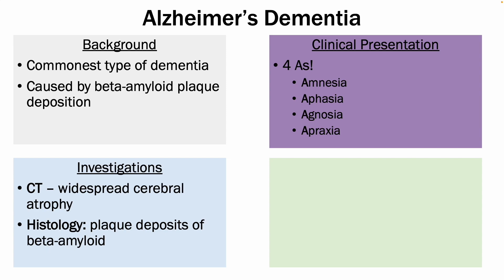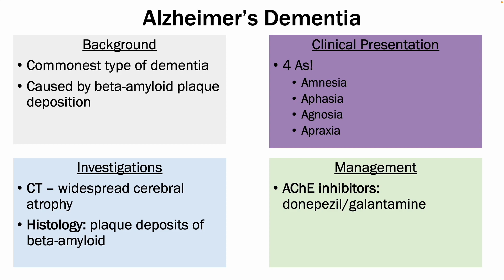In terms of management, for mild or moderate cases you can use acetylcholinesterase inhibitors, such as donepezil and galantamine, and the side effects of this medication include diarrhea, nausea, dizziness, and insomnia. Whereas for severe cases, you can use NMDA antagonists, such as memantine, and the side effects of that medication include confusion, dizziness, and constipation.